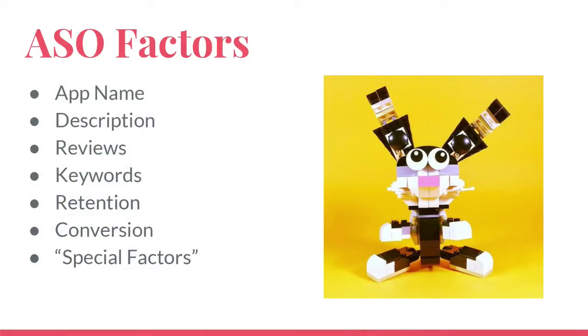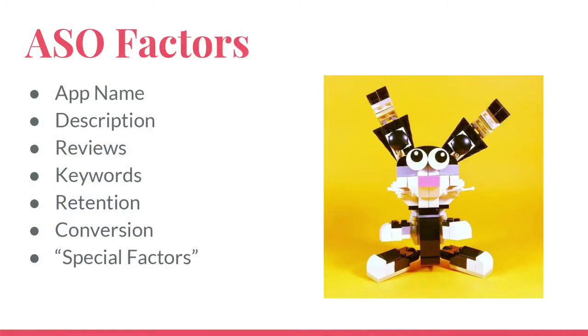In the previous video, we talked about what App Store optimization is about, and I talked about balancing the algorithm and the user. We're going to go through some of the factors that really go into how well your app is ranked for a certain keyword. First and foremost, and probably the most important thing, is your app name. You want to have keyword-rich app names, and you want to make sure your app name is optimized for search.